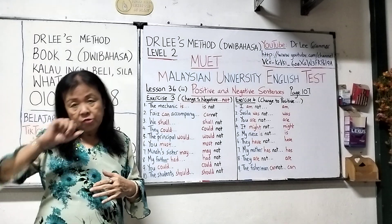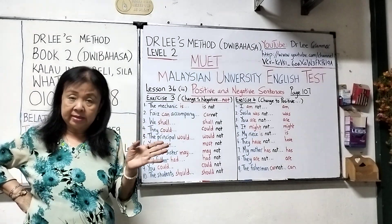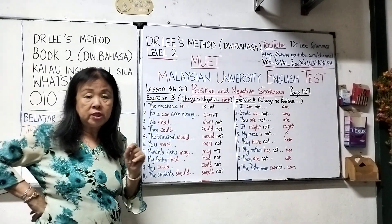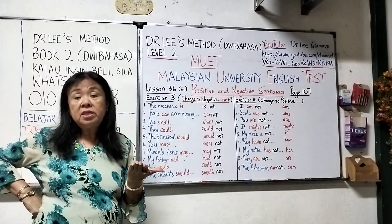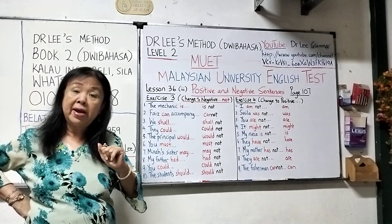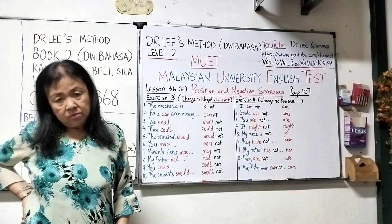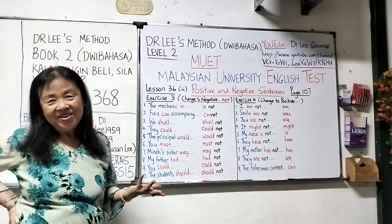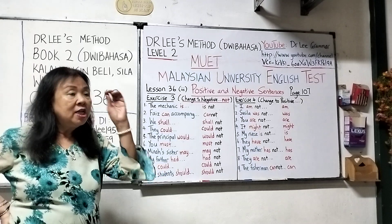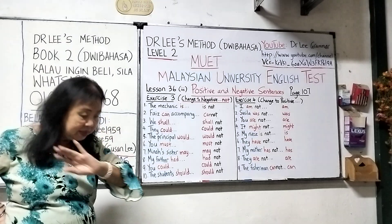Number two: 'Susila was not washing the clothes yesterday.' Change to the positive — throw the 'not' away: 'Susila was washing the clothes yesterday.' Number three: 'You are not going to the market to buy fish.' 'Are not' — change to the positive, throw the 'not' away: 'You are going to the market to buy fish.' Number four: 'It might not rain this afternoon.' 'Might' is a modal verb but the method is the same — throw the 'not' away: 'It might rain this afternoon.'